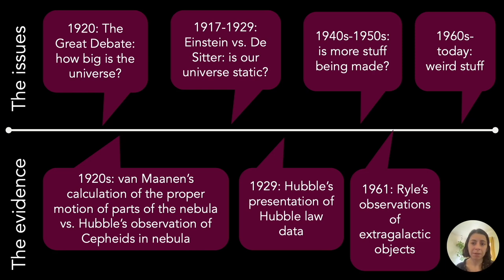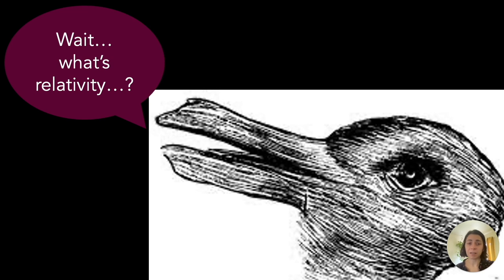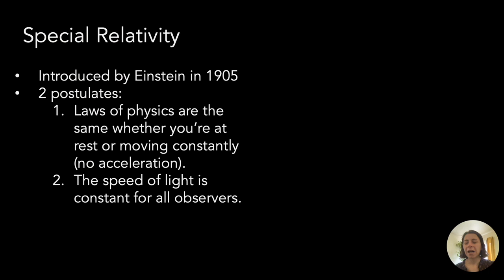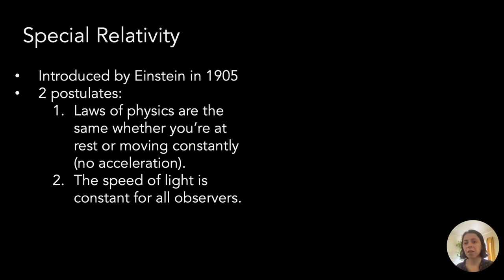The second episode is Einstein versus De Sitter on whether the universe is static. To understand that we need a bit of relativity. Relativity comes in two flavors. First, special relativity, which comes in 1905, has two main ideas.